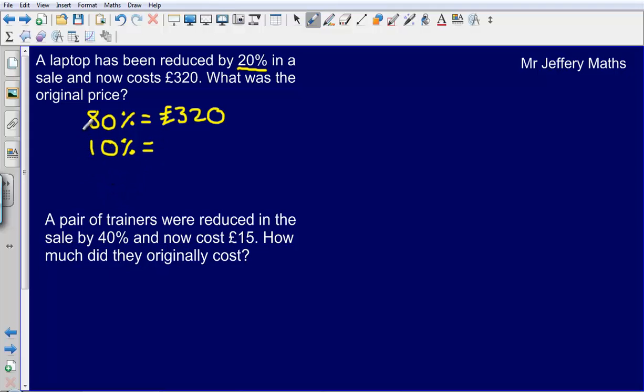So the way that I am going to do this I am going to work out what 10% is. In this case if 80% equals £320 that means that 10% will be £320 divided by 8 which gives me an answer of 40.